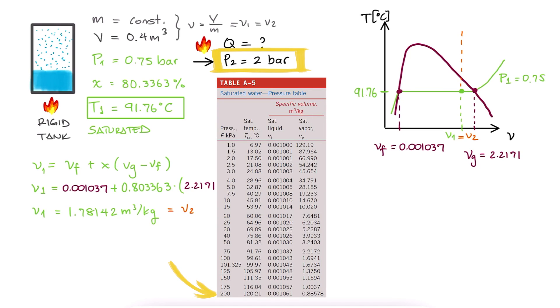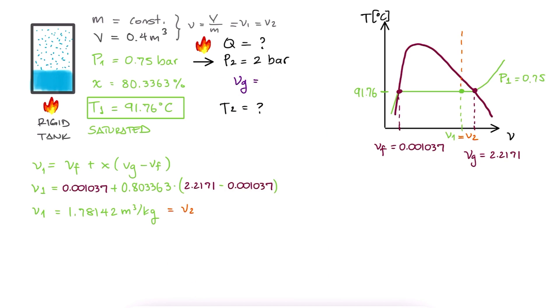With P2, we look up the specific volume for a saturated vapor, and since at 0.88578 the saturated vapor specific volume is lower than the current specific volume, we can conclude that our water is in a superheated vapor state.